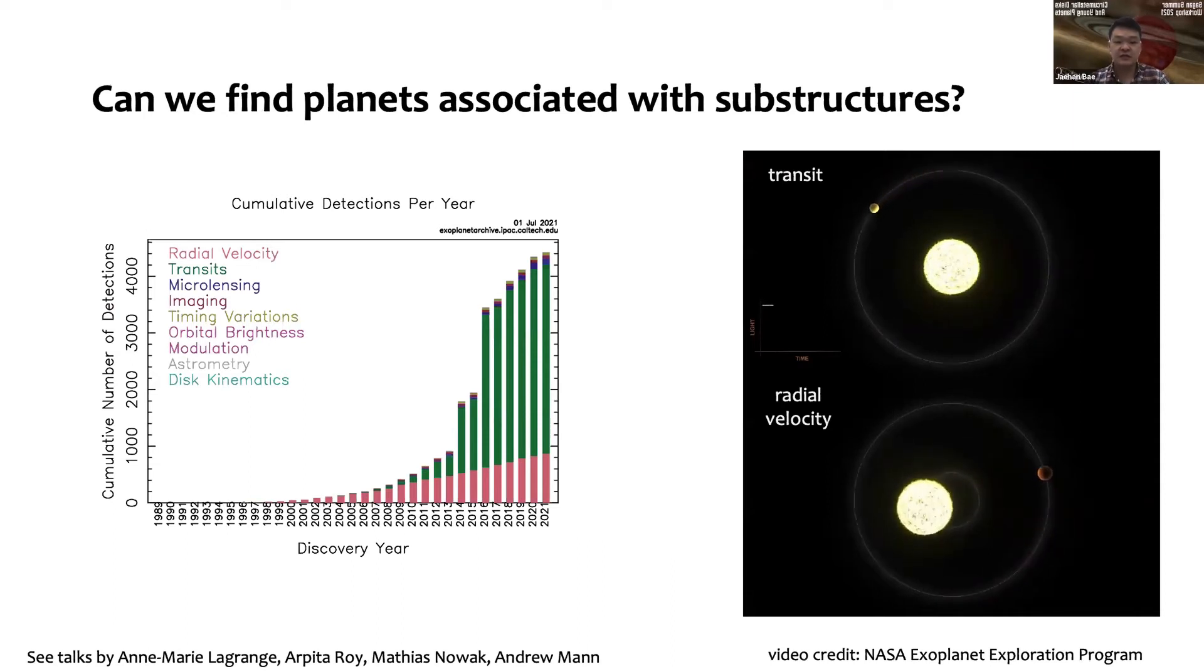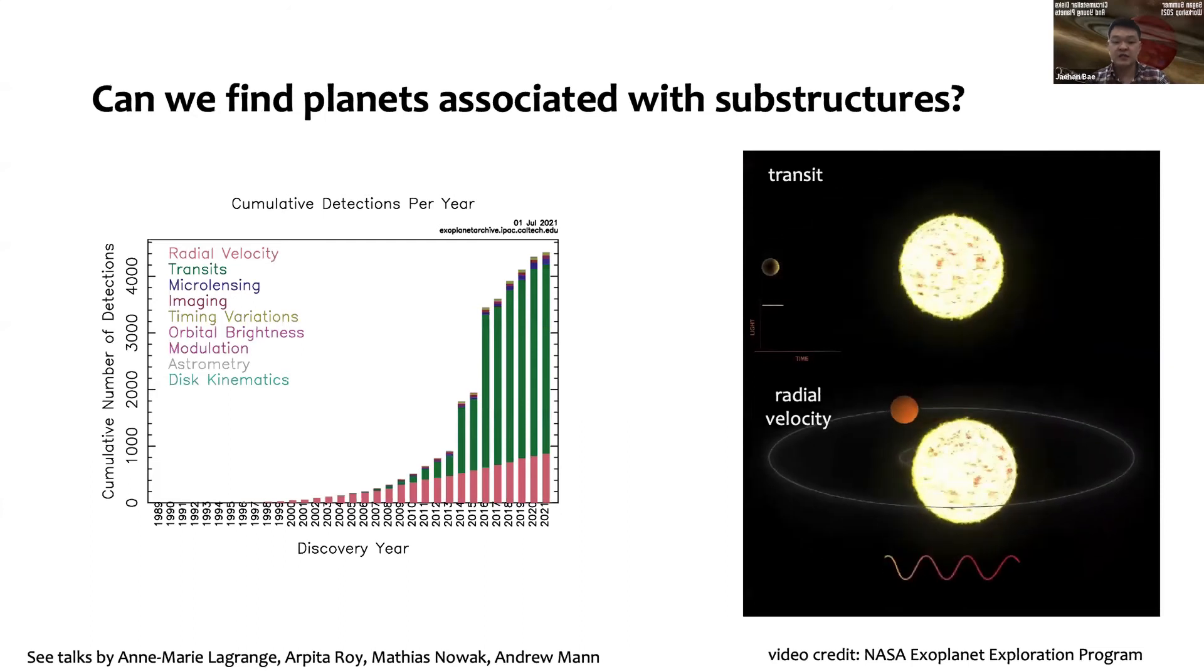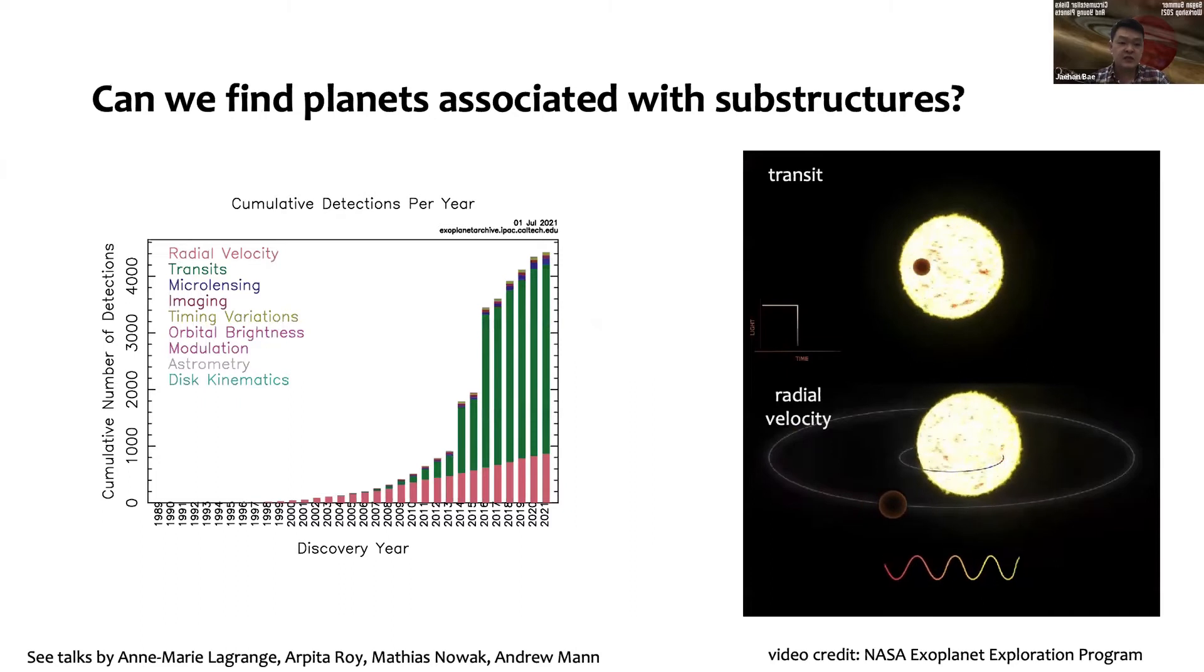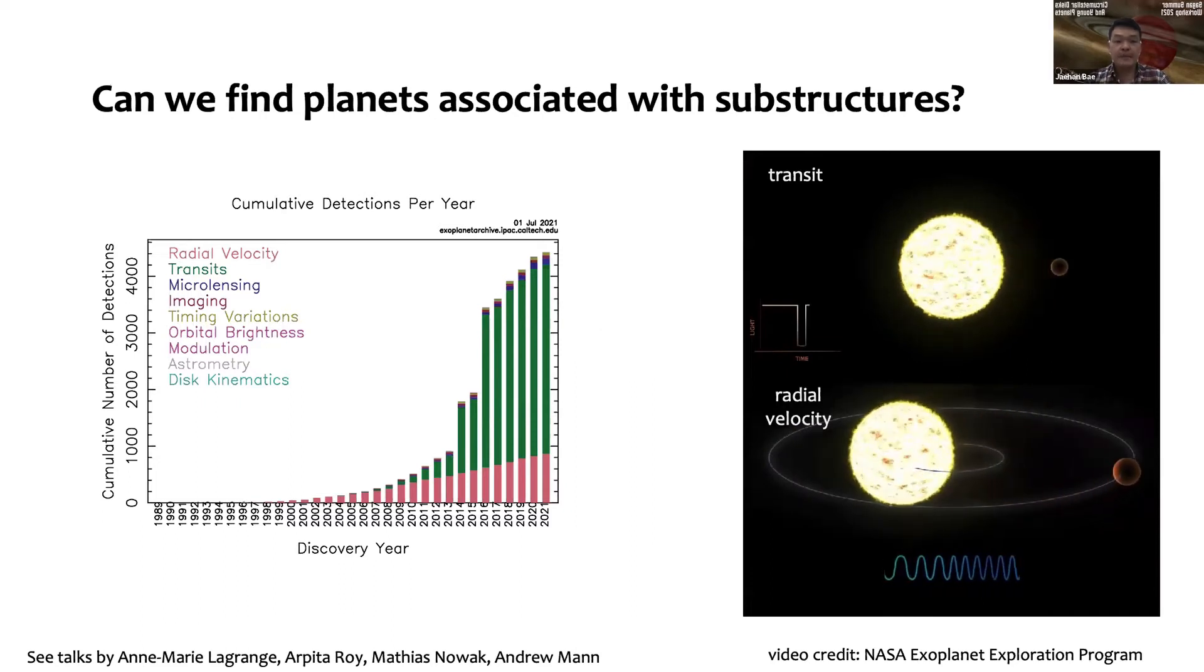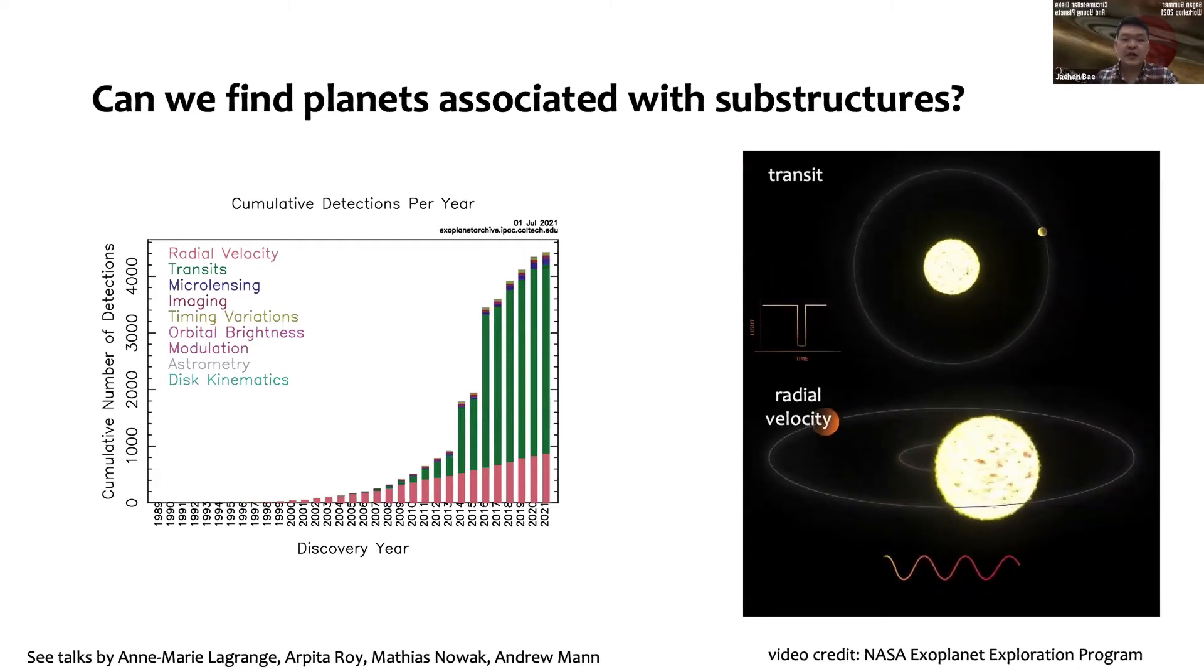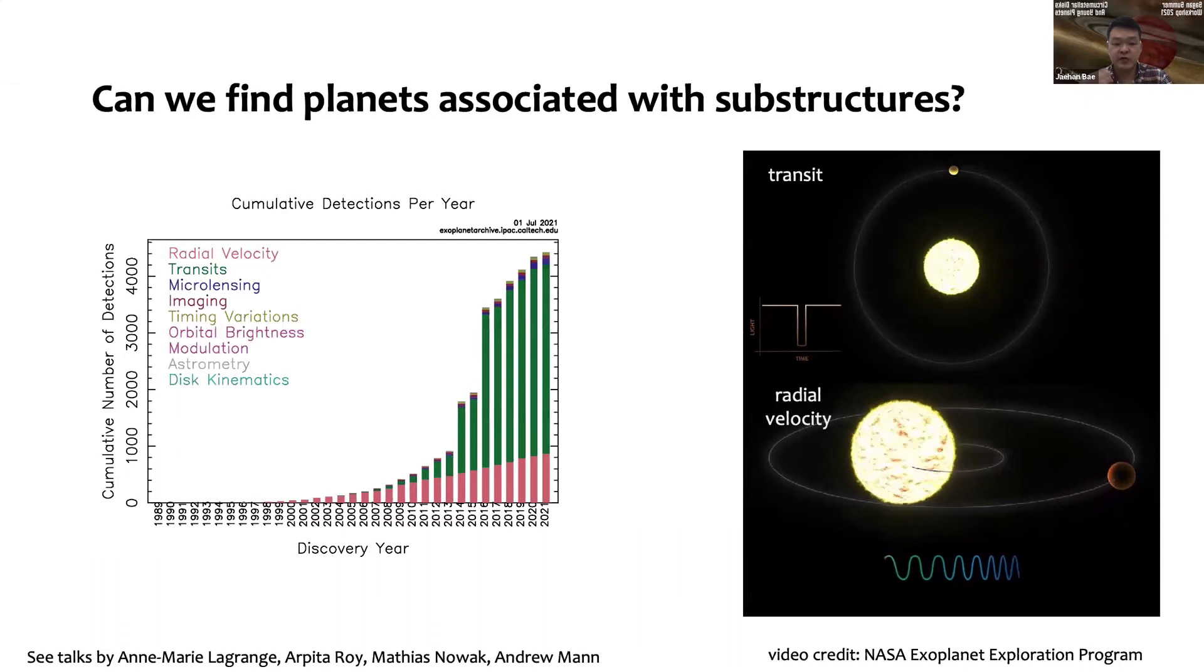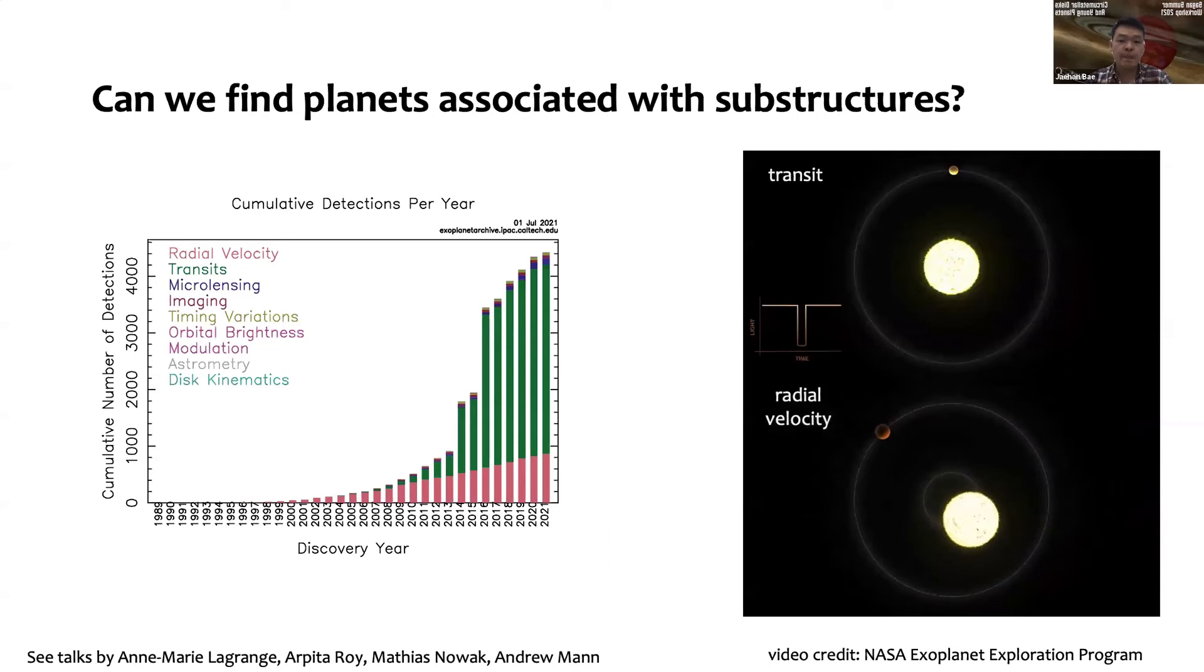I'm talking about these substructures and trying to connect planets and these substructures, and you might want to ask: why not just go find these planets in those disks? We know that there are a lot of planets at least in our galaxy, and we have discovered more than 4,000 exoplanets by far using various methods. But unfortunately we cannot use most of them.